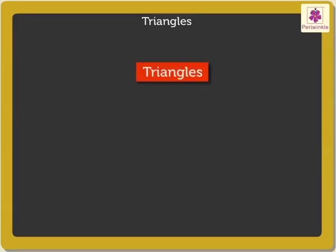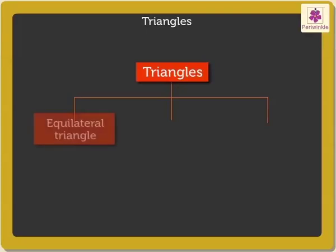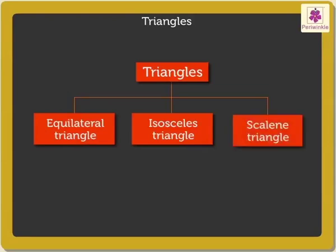Triangles are of three types: equilateral triangle, isosceles triangle, and scalene triangle. Let's study each of them in a little detail.